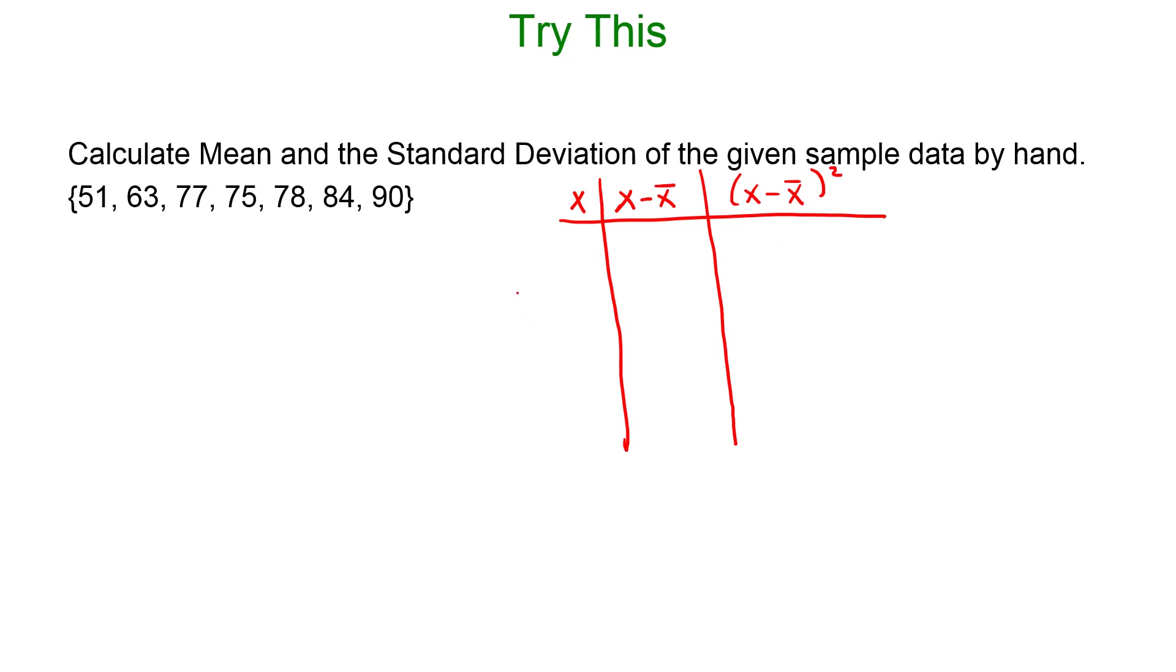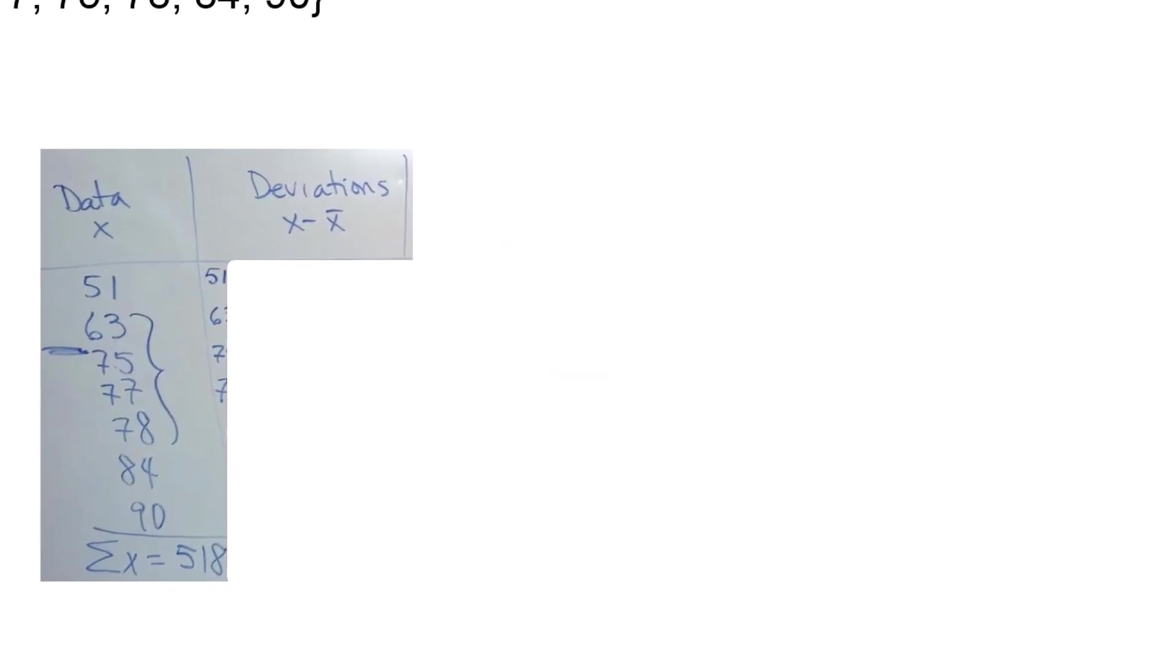Right now I'm going to enter my data values. I like to have them listed so I can add them up. I have my data values listed out in the X column. I am adding up the data values and getting 518. I find my mean which is gonna be 518 divided by the number of data values which is 7. And then that turns out to be 74. Is that what you got?